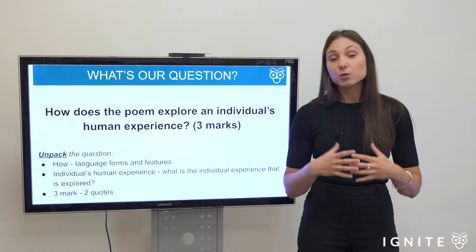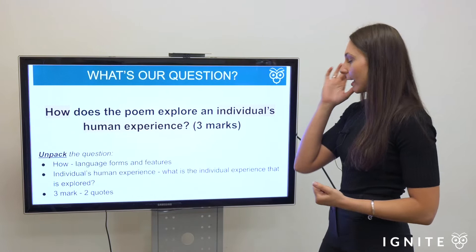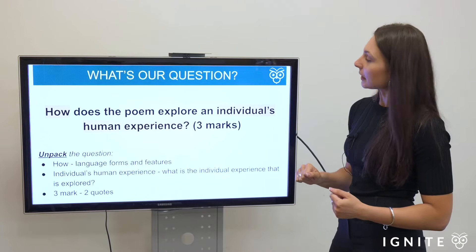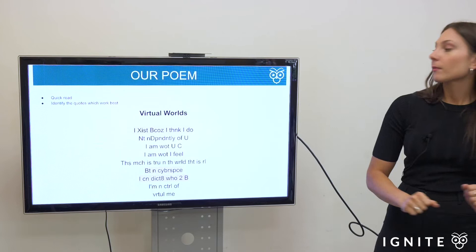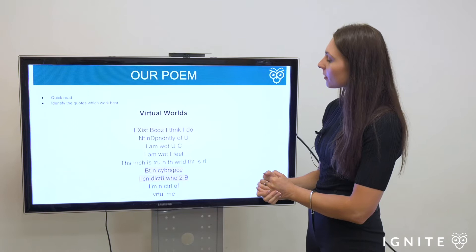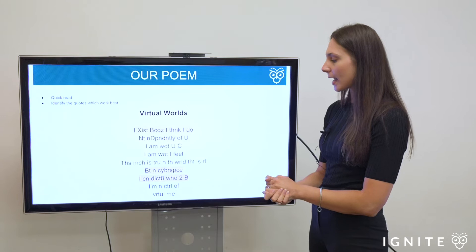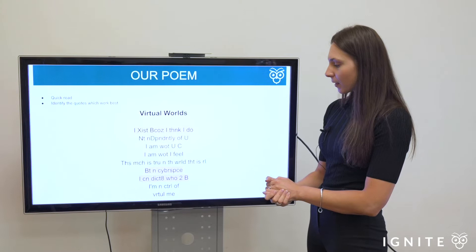You're not just saying 'the poem explores individual experience' — you're saying 'the poem explores the individual experience of...' and then you specify what that experience is. This will make a lot more sense when we look at the exemplar. Also note that it's a three-mark question, which means we must use two quotes in our response. Let's have a quick read through the poem. 'Virtual Worlds: I exist because I think, I do not independently of you. I am what you see, I am what I feel — this much is true in the world that is real. But in cyberspace I can dictate who to be; I'm in control of virtual me.'